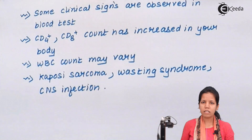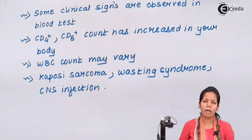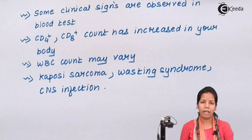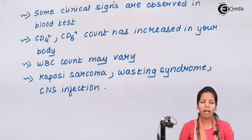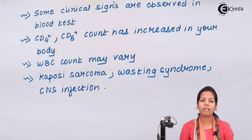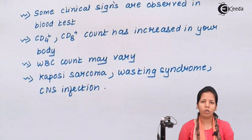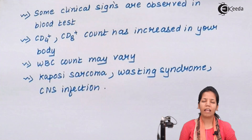So students, in this part of the chapter we studied how HIV or AIDS could be diagnosed, and what are the preliminary tests and what are the confirmatory tests. Western Blot is the confirmatory test and ELISA is the preliminary or starting test. I hope you all are clear with this concept. Thank you.